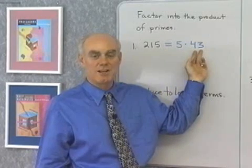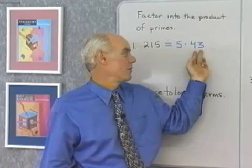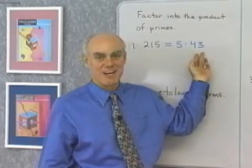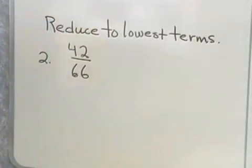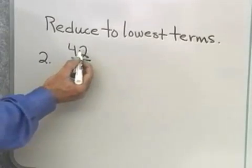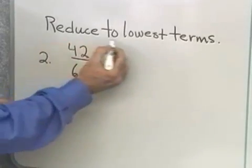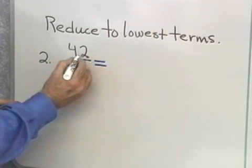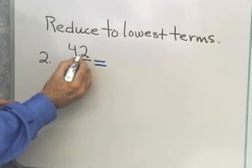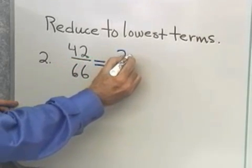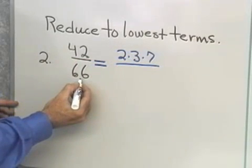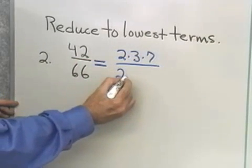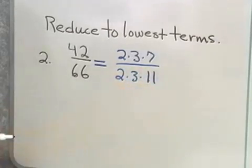Now, the next problem that we want to do is reducing a fraction to lowest terms, and it involves factoring. So, here I have 42 over 66. The instructions are reduce to lowest terms. So, I'm going to take 42 and write it as the product of prime numbers. 42 is 6 times 7, and 6 is 2 times 3, so it's 2 times 3 times 7. 66 is 6 times 11, so it's 2 times 3 times 11.